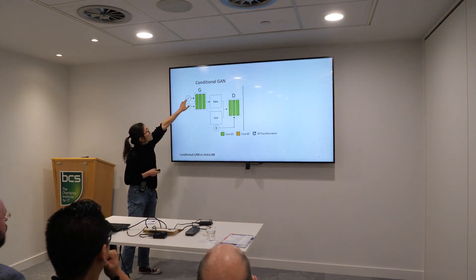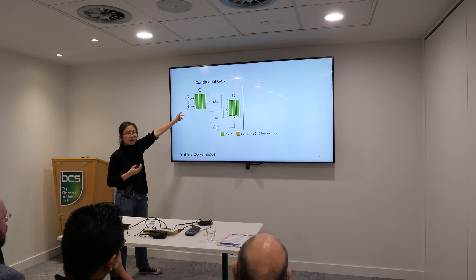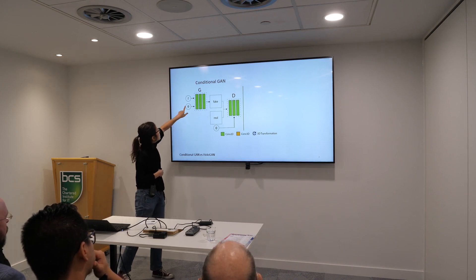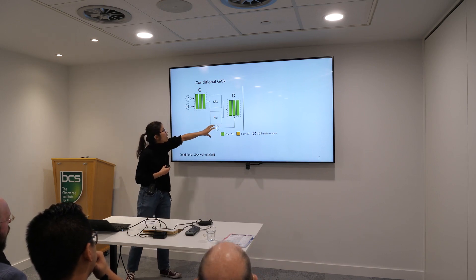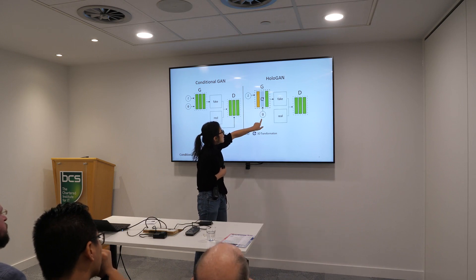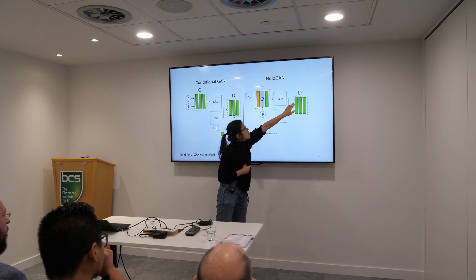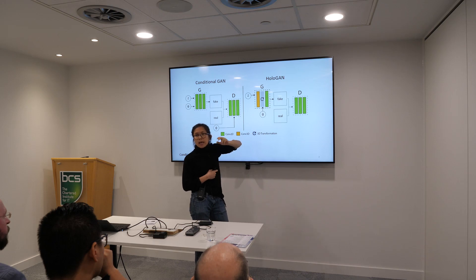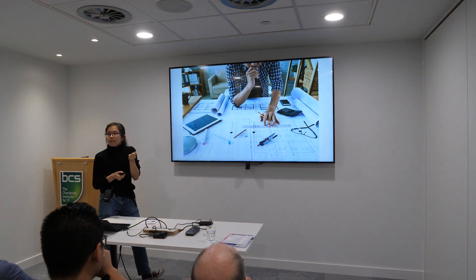In a normal conditional GAN, you have some noise vector Z going into a generator, and if you want to control the output you have some extra input — like pose — that you give to the generator. But during training you also have to give this pose information to the discriminator. In HoloGAN, the generator can take pose information as input, but the discriminator still only sees images — no pose labels.